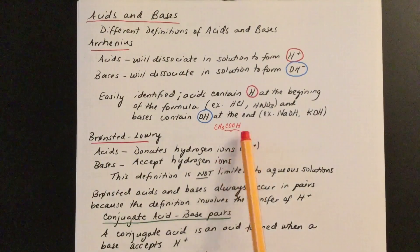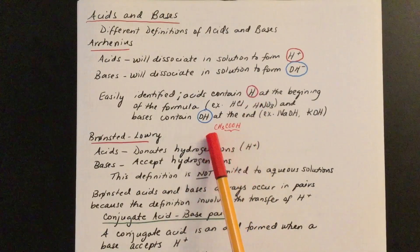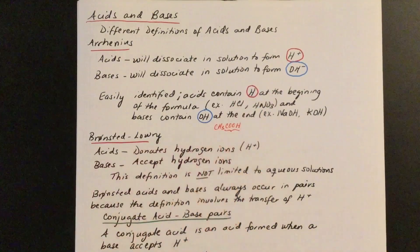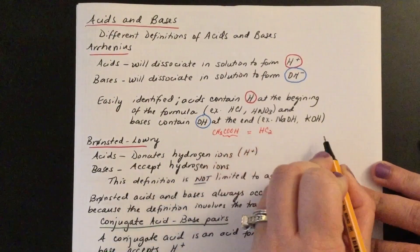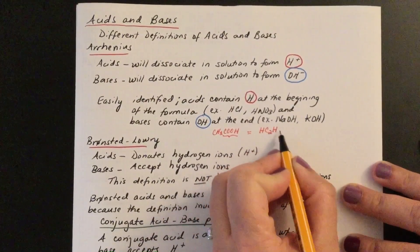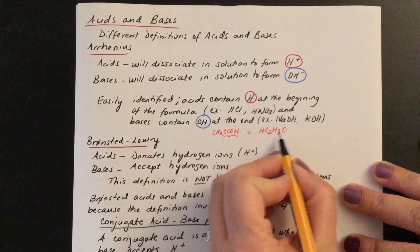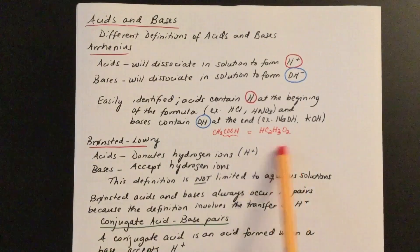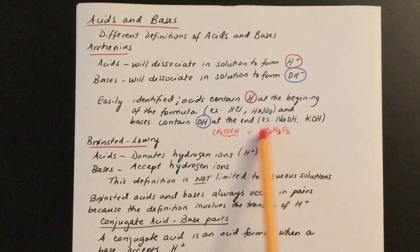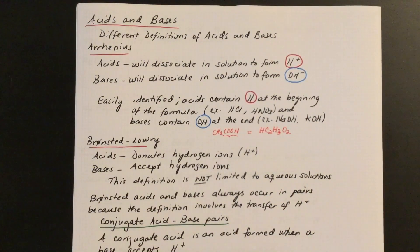The acidic proton is the one bonded to oxygen, so this is still an acid even though the proton is not shown at the beginning of the formula. This type of acid is sometimes represented showing the acetate ion — the positive part is the proton, and the negative part is the acetate ion. They represent exactly the same thing: it's acetic acid.